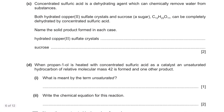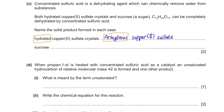Part d. Concentrated sulfuric acid is a dehydrating agent that can chemically remove water from substances. Both hydrated copper sulfate crystals and sucrose (C₁₂H₂₂O₁₁) can be completely dehydrated by concentrated sulfuric acid. When hydrated copper sulfate is dehydrated, it becomes anhydrous copper sulfate. When sucrose is dehydrated, all hydrogen and oxygen atoms are removed, leaving just carbon.